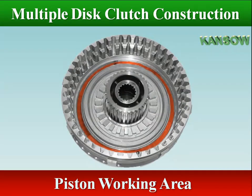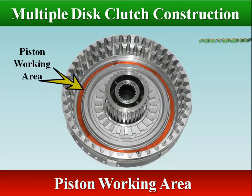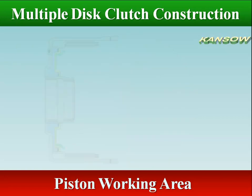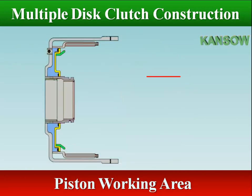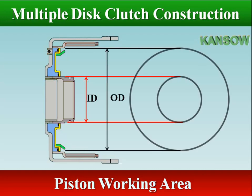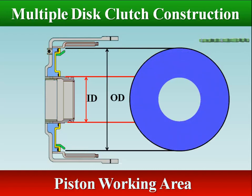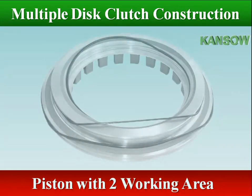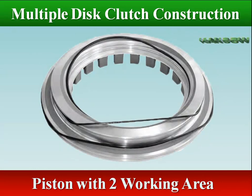A typical clutch piston area is determined by subtracting the area of the inner diameter from the area of the outer circle diameter. Some clutch pistons use a middle seal so the piston will have two working areas.